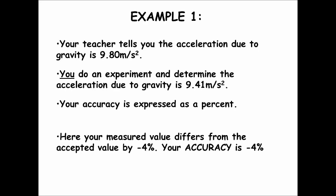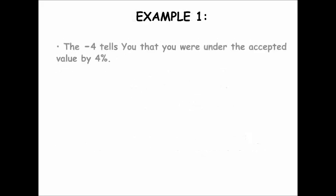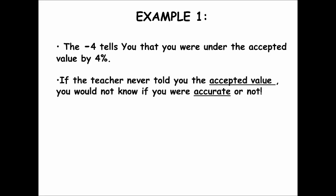Your accuracy is negative 4% — that's not your precision. The negative 4 tells you that you are under the accepted value by 4%; the negative sign means it's under the accepted value. If the teacher never told you the accepted value, you would not know if you are accurate or not. You can treat that accepted value as though it's the bullseye and you're shooting an arrow at it.